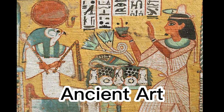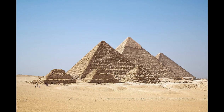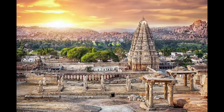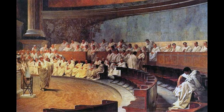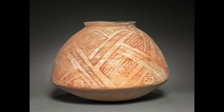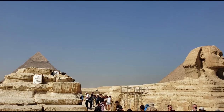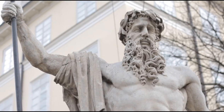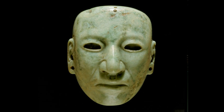Ancient art. The next major period in the history of art was in ancient times, which covers the civilizations that emerged in the regions of Mesopotamia, Egypt, Greece, Rome, India, China and Mesoamerica. Ancient art reflects the political, social and religious aspects of these cultures, and shows their achievements in architecture, sculpting, painting, pottery, metalwork and writing. Some of the most iconic examples of ancient art are the pyramids and sphinxes of Egypt, the Parthenon and statues of Greece, the Buddhist statues and temples of India, and the pyramids and masks of Mesoamerica.